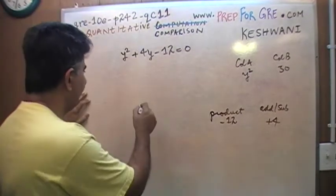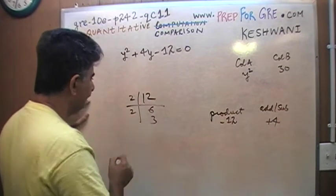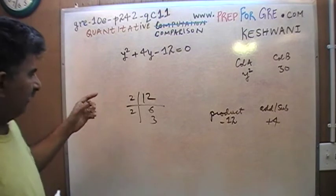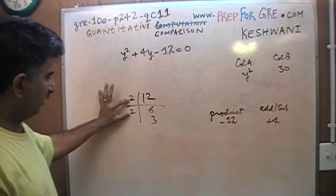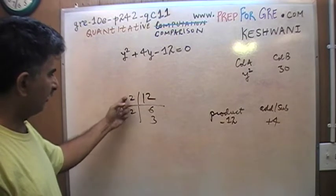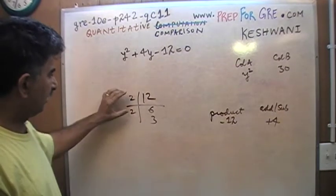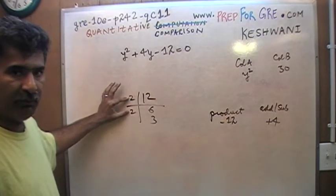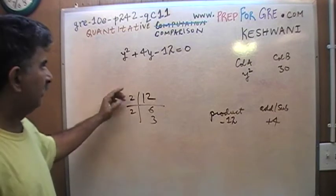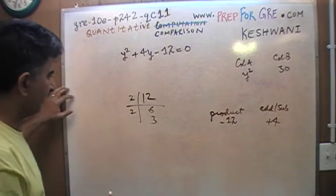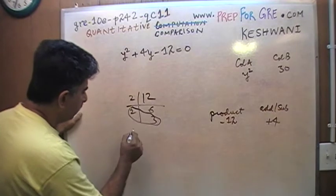Well, 12 is pretty straightforward if you break it up. There are not too many possibilities here. It is either 2 times 6, or 4 times 3. Four times 3 is not going to help because if you add 4 and 3 you get 7, but if you subtract 4 from 3 you get either 1 or negative 1. We need a positive 4.